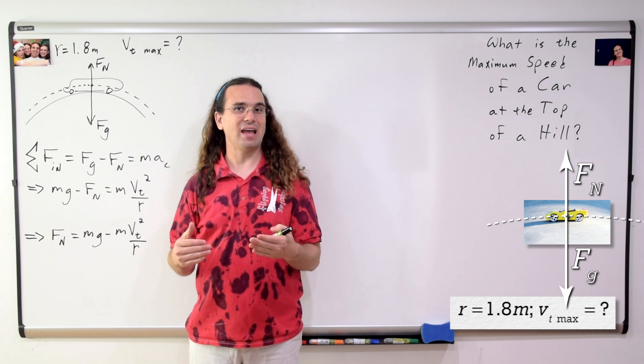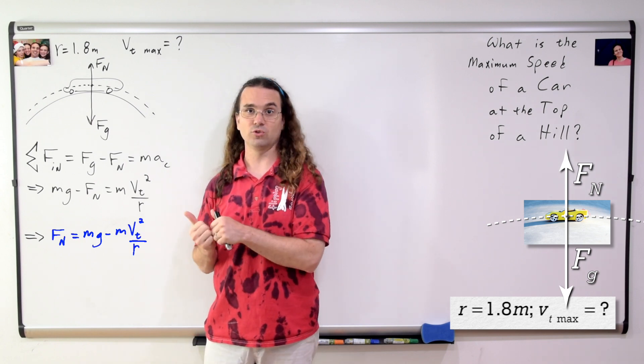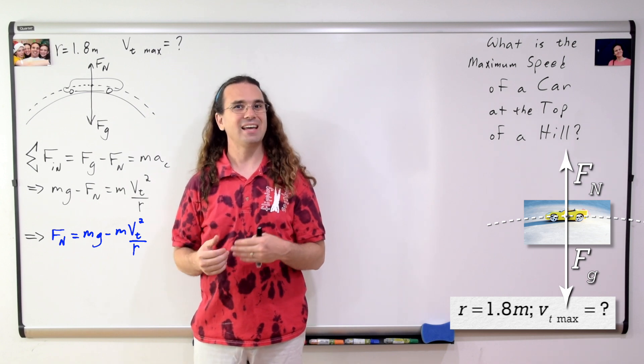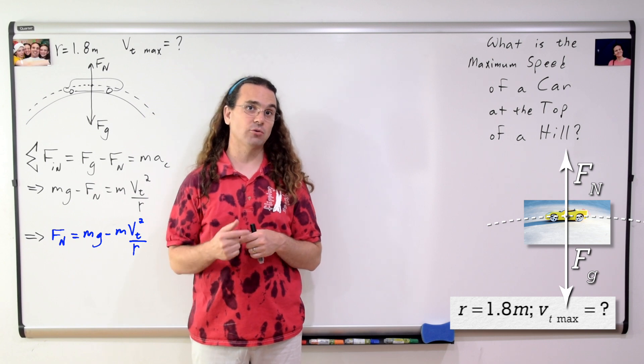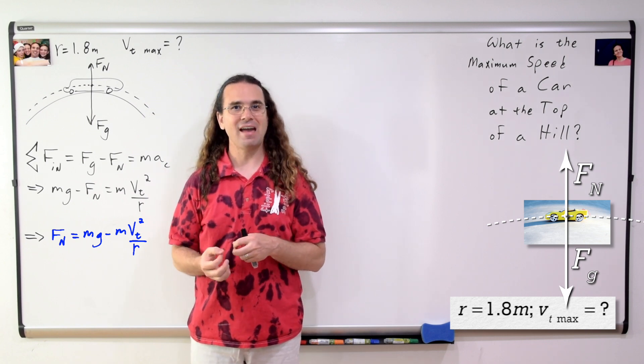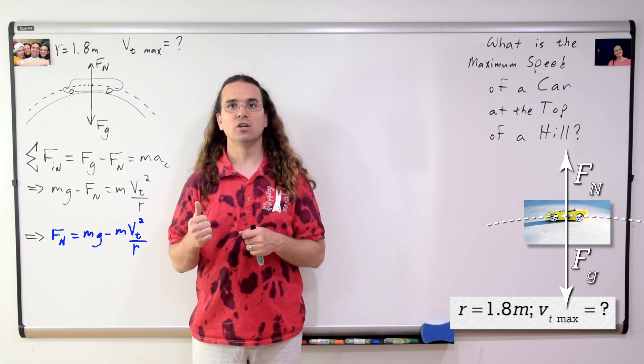If you recall, the last time we had the same physical situation, however, we solved for the force normal. And we showed that as the speed of the car increases, the force normal decreases. The limiting factor here is that the force normal cannot be negative.